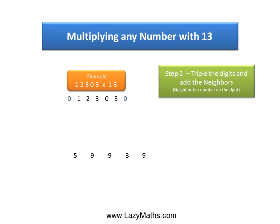And then lastly, the last pair 0 and 1, triple of 0 is 0 plus the 1 gives us a 1. And we get our final answer as 159939.